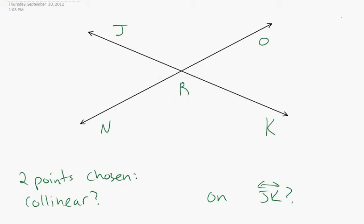If we pick two points at random, what are the chances that they're collinear? How many different ways are there to pick two points?